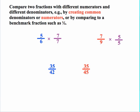Now comparing thirty-five over forty-two to thirty-five over forty-five: forty-two has fewer parts, so those parts are larger. We have thirty-five of the larger parts versus thirty-five of the smaller parts, so thirty-five over forty-two is bigger than thirty-five over forty-five. Therefore, five-sixths is larger than seven-ninths. Care must be taken here — remember the inverse relationship in the denominator. The more parts you have, the smaller those parts are going to be.